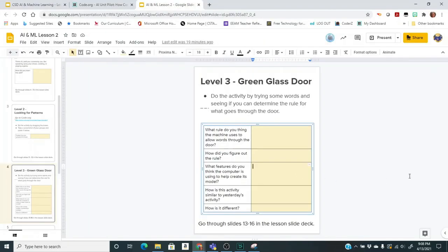Then we're going to go back to our lesson document and try those last three questions. So what features do you think the computer is using to help create this model? And then how is this activity similar to yesterday's or lesson one's activity where we were training it to recognize fish? How is it like that and how is it different? You can pause the video and answer these three questions. Be ready to discuss.